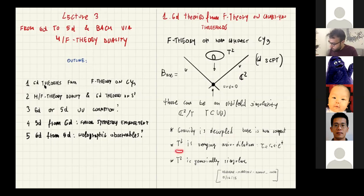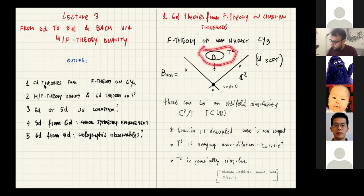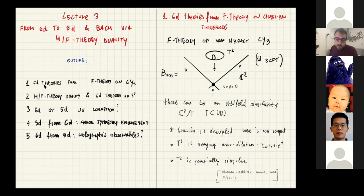The T2 is the varying axio-dilaton. In F-theory, the T2 is not really a physical T2 but is basically the varying axio-dilaton complex structure, and the T2 can be generically singular. This singularity will be important as I will show in a second.